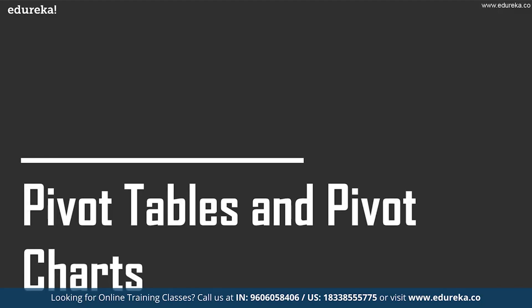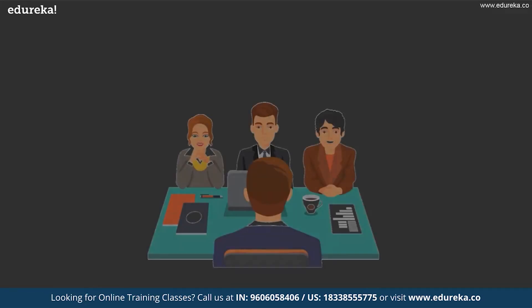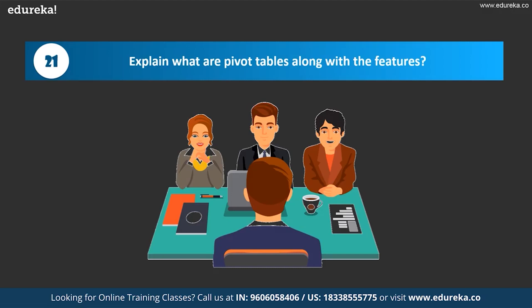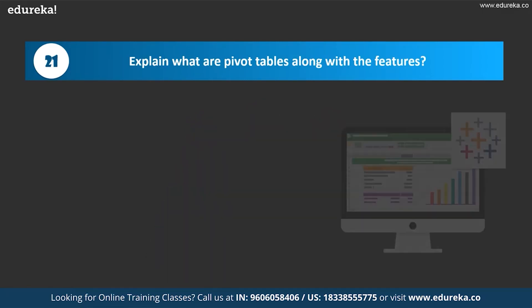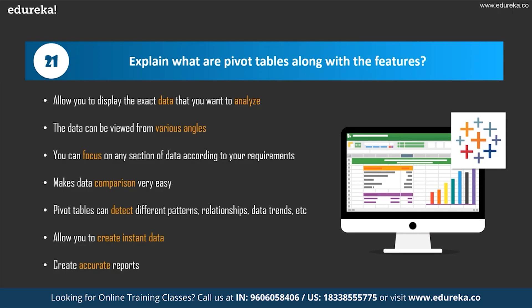Now moving on to the section on pivot tables and charts. Explain pivot tables along with their features. Pivot tables are statistical tables that condense data from tables with extensive information. The summary can be based on any field such as sales, averages, sums, etc. Important features include displaying exact data you want to analyze, providing various angles to view data, allowing focus on important details, easy data comparison, and detecting patterns, relationships, and data trends.